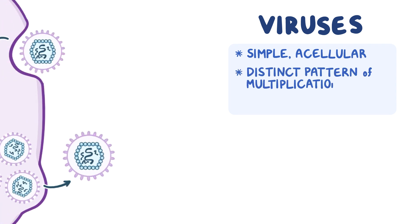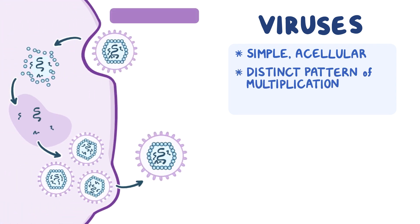As a quick recap, viruses are a unique group of infectious agents with a simple acellular organization and a distinct pattern of replication. They can exist either extracellularly, where the virus is inactive and isn't capable of reproducing, or intracellularly, where the capsid is removed and the virus becomes active.